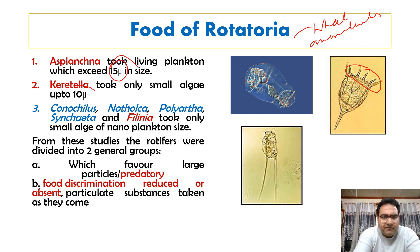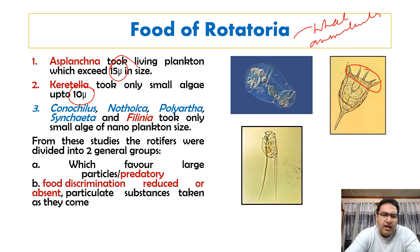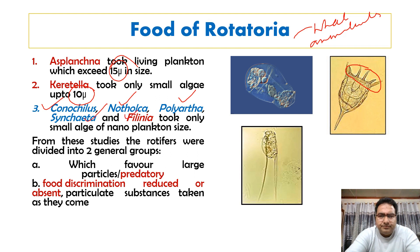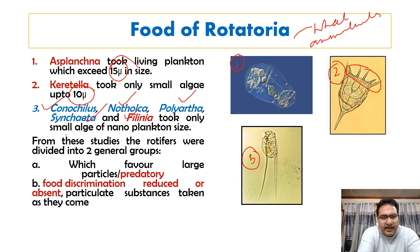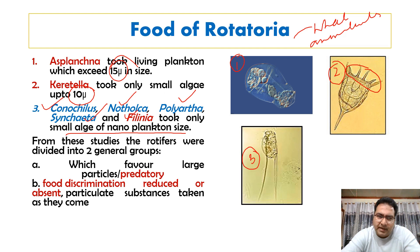Keratela had a preference toward small algae of about 10 microns in size. Experiments were also conducted on Conochylus, Notholca, Polyartha, Synchaeta, and Philodina. It was found that Philodina and other rotifers took only small algae of nanoplankton size — that is, they had a preference for very small-sized planktons.